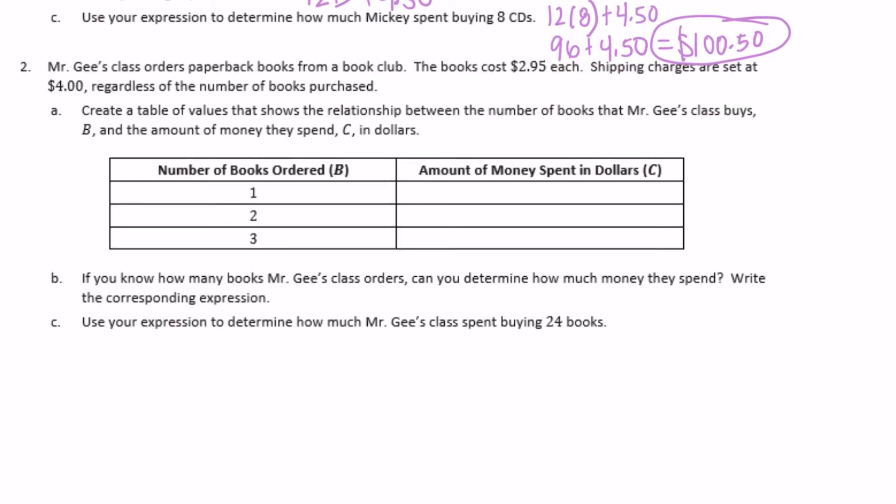Number two: Mr. G's class orders paperback books for a book club. The books cost $2.95 each. Shipping charges are set at $4, regardless of the number of books purchased. Create a table of values that shows the relationship between the number of books that Mr. G's class buys, B, and the amount of money they spend, C, in dollars.